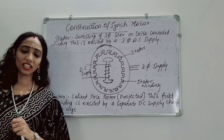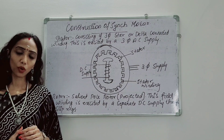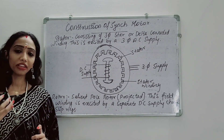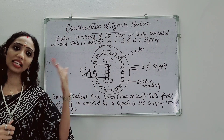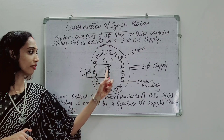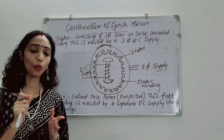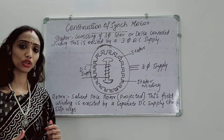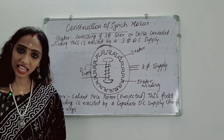Why are Synchronous Motors not self-starting? The answer involves Damper Winding. The rotor is projected — like a salient pole — and similar to a single-phase induction motor, we have a double field revolving theory. The Damper Winding provides copper bars for the projected poles, which can short-circuit with the stator magnetic flux, completing a 360-degree rotation.